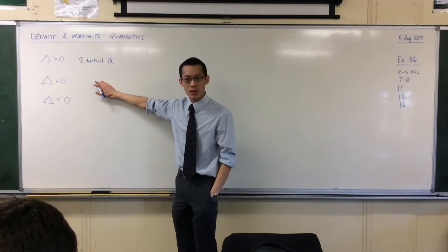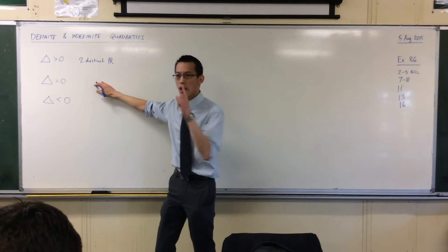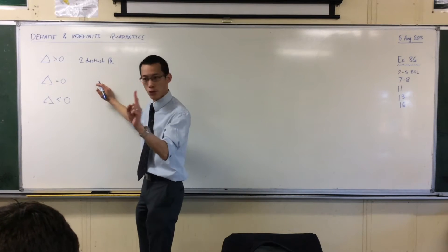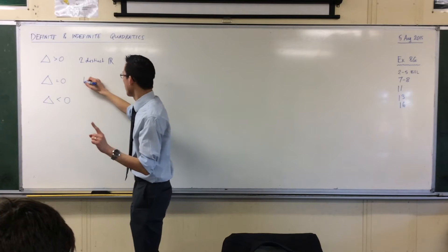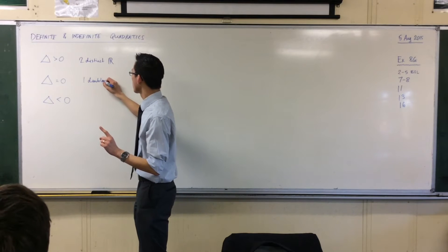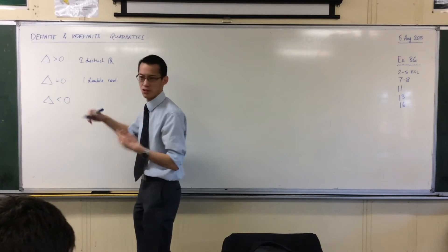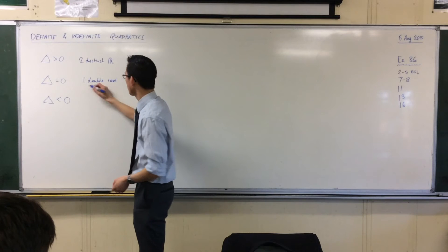If the discriminant is equal to zero, we get one double root — a double root, or equal roots, which are really just two ways of saying the same thing.